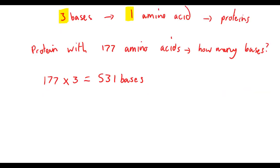Alternatively, if you had 333 bases, how many amino acids would that produce? Well, that would be 333 divided by 3, which would give you 111 amino acids.